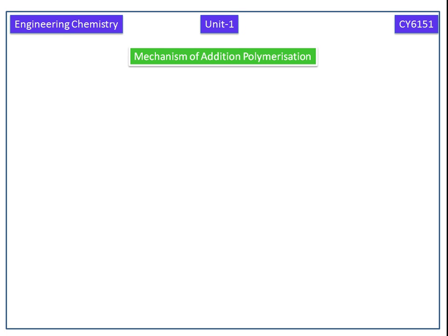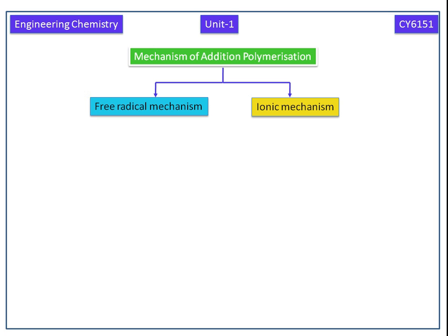Now we discuss the mechanism of addition polymerization. This can be explained by any one of the following methods. The first one is free radical mechanism. The second one is ionic mechanism. These two mechanisms occur in three major steps: initiation, propagation, and termination.